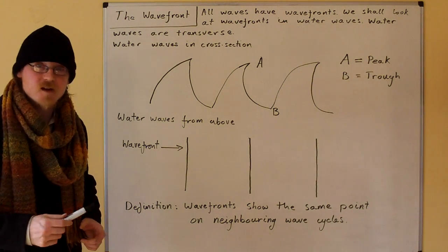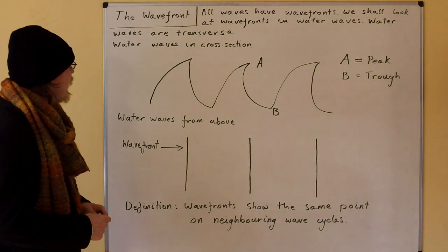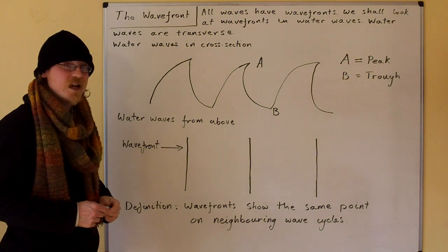Water waves are transverse, which means they have peaks and troughs. Now, let's look at water waves in cross sections.